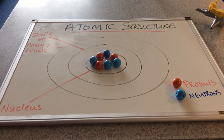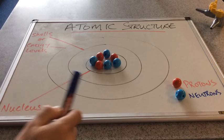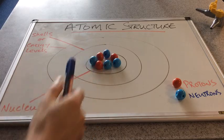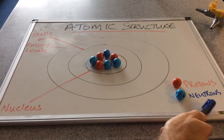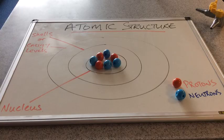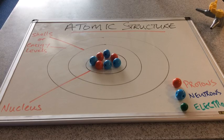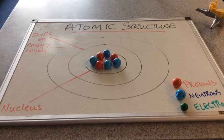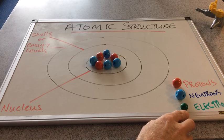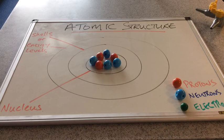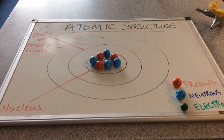I've put a second subatomic particle in the nucleus, represented with blue spheres, and these are the neutrons. Neutrons also live in the nucleus. The third type of subatomic particle is the electron, represented by smaller green spheres, and the electrons live in these shells.